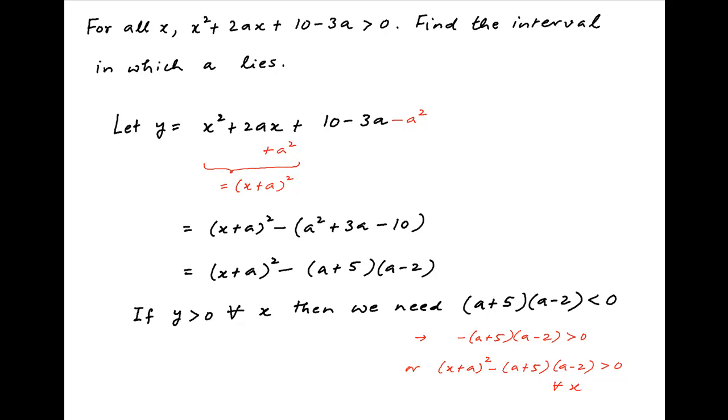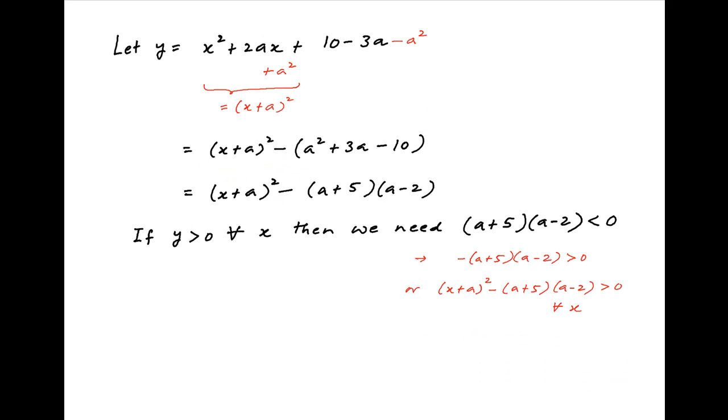Therefore, y is greater than 0 when (a plus 5) times (a minus 2) is less than 0. Now (a plus 5) times (a minus 2) is negative when a is greater than minus 5 and less than 2. And this is the required answer.